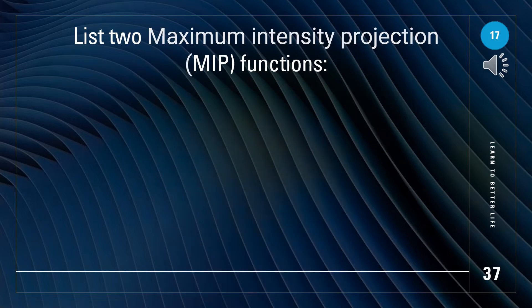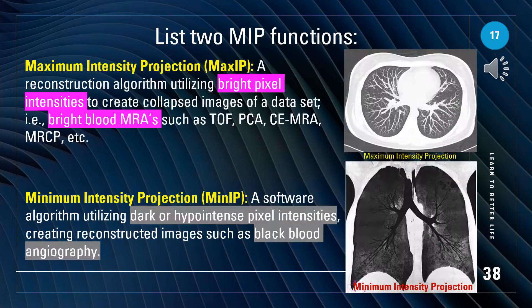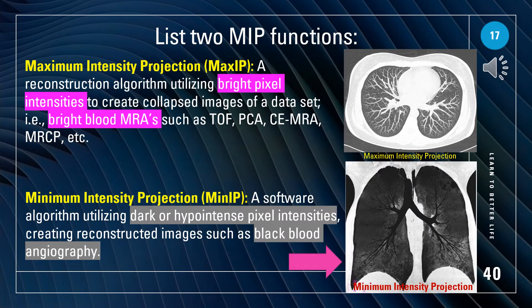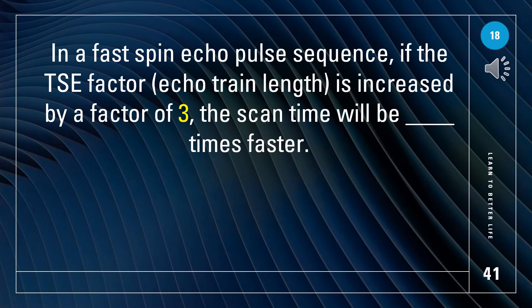List 2 Maximum Intensity Projection (MIP) functions. They are Maximum Intensity Projection (Max IP) and Minimum Intensity Projection (Min IP). Max IP is a reconstruction algorithm utilizing bright pixel intensities to create collapsed images of a data set, such as bright blood MRAs. Min IP is a software algorithm utilizing dark or hypo-intense pixel intensities, creating reconstructed images such as black blood angiography.